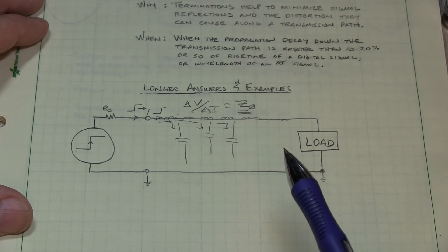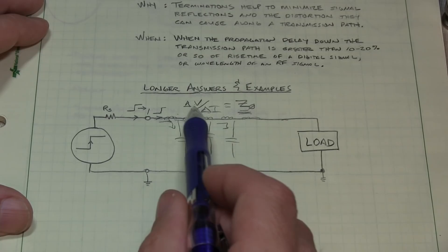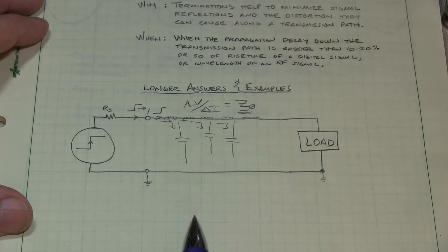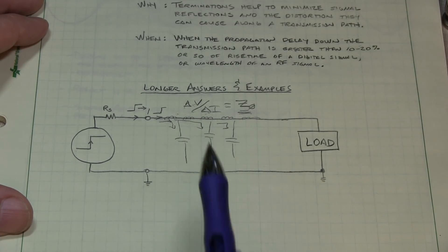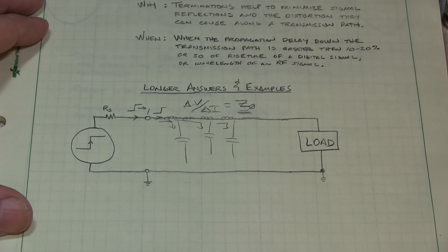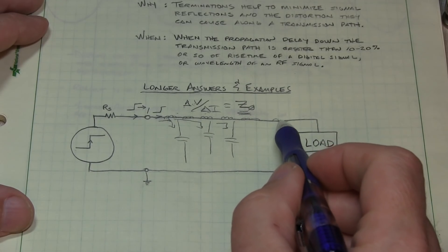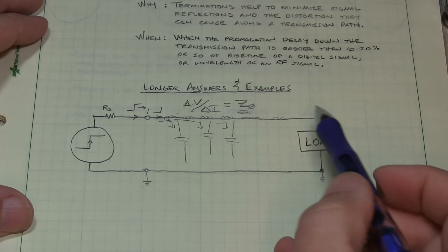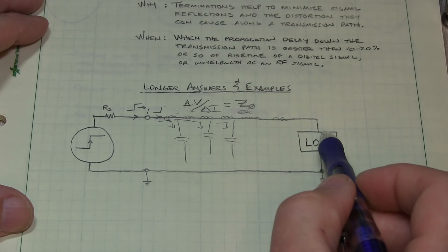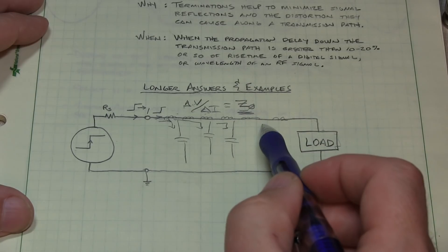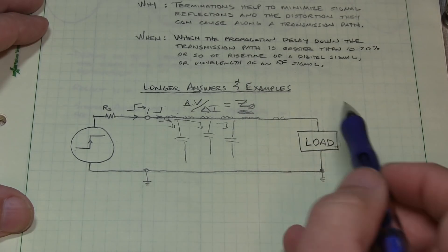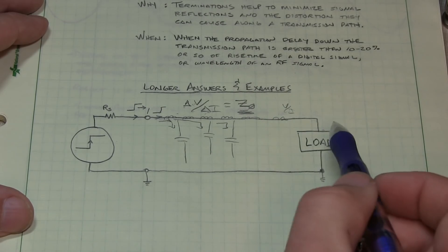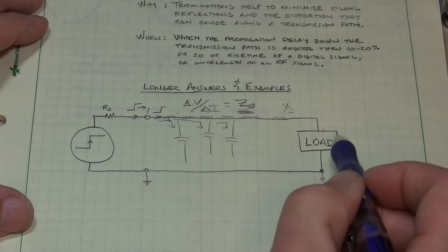If it's a 50 ohm transmission line, the instantaneous change in voltage over change in current is going to have a 50 ohm relationship. If it's a 75 ohm line, that voltage and current wavefront going down the line will have that impedance. What's interesting is what happens when we get to the end of the line. If this wavefront has a 50 ohm relationship and the load doesn't present that same impedance, there will be a step voltage change. If the load is a high impedance, all of a sudden the voltage is going to jump up higher.